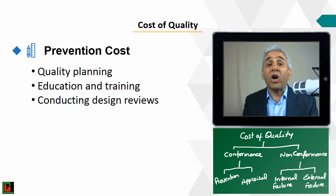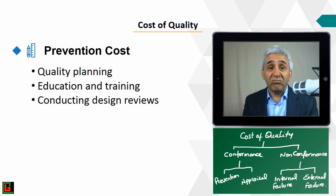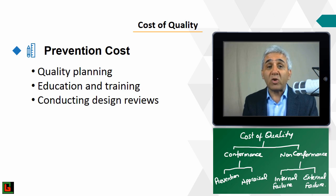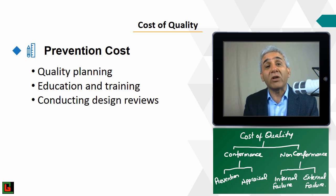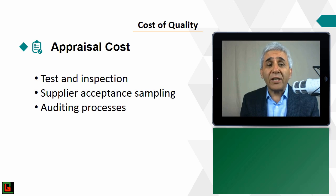In practice, you want to spend more on prevention and appraisal to reduce internal and external failure costs. Between the two, your preference should be to invest more in prevention than appraisal — if you can prevent the defect from the beginning, you may not even need to inspect it. If you invest a dollar in prevention, you would save more than a dollar in internal failure, external failure, or even appraisal costs.